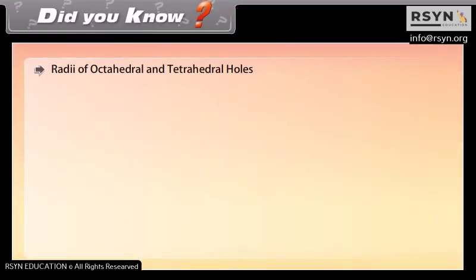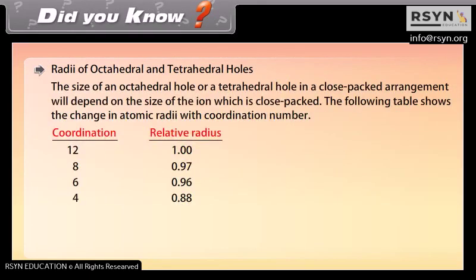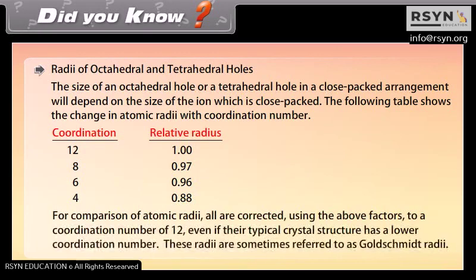The size of an octahedral hole or a tetrahedral hole in a close-packed arrangement depends on the size of the ion which is close-packed. The following table shows the change in atomic radii with coordination number. For comparison, all radii are corrected to a coordination number of 12, even if their typical crystal structure has a lower coordination number. These radii are sometimes referred to as Goldschmidt radii.